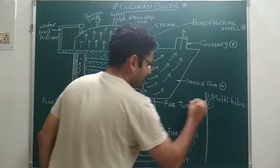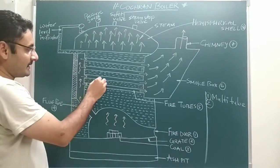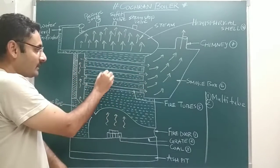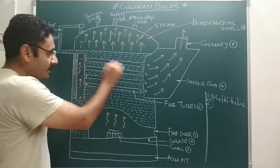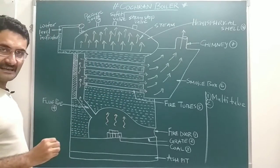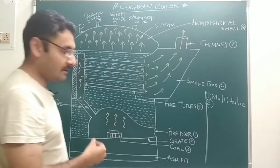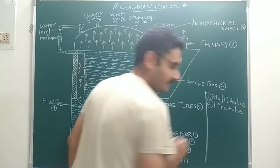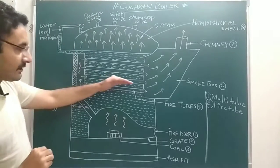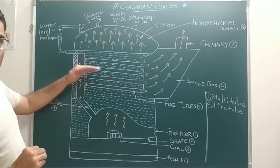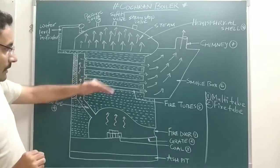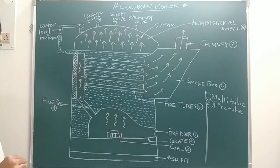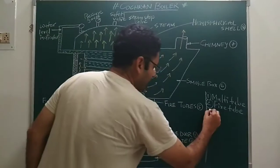Next point: as we know, surrounding the tubes, water is present, and inside the tubes, hot flue gases are present. That means it is a fire tube boiler. It is a fire tube boiler because inside the pipe, hot flue gases are present, and surrounding the pipe, water is present.